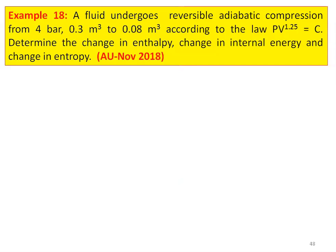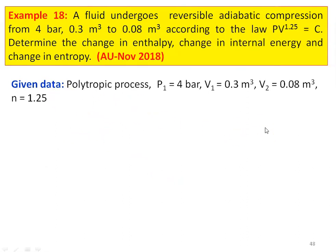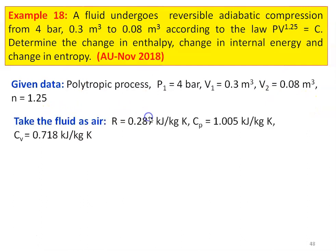Example number 18, from Anna University question paper November 2018: A fluid undergoes a reversible adiabatic compression from 4 bar, 0.3 meter cube to 0.08 meter cube according to the law PV to the power 1.25 equal to constant. Determine the change in enthalpy, change in internal energy, and change in entropy. This is the polytropic process with P1 equal to 4 bar, V1 equal to 0.3 meter cube, V2 equal to 0.08 meter cube, and n equal to 1.25.